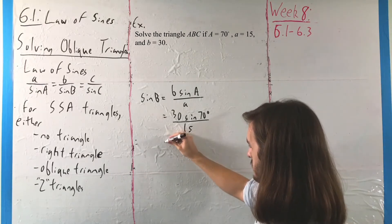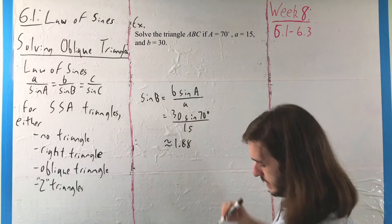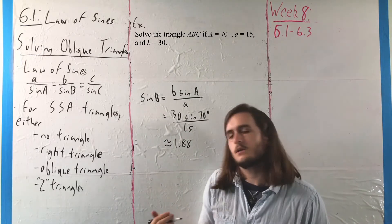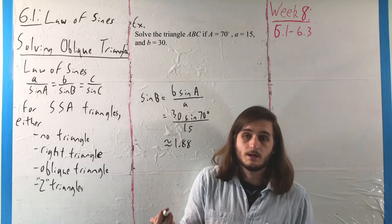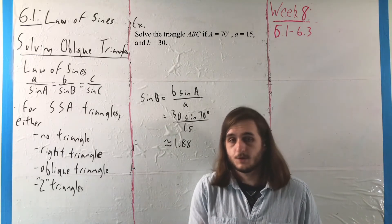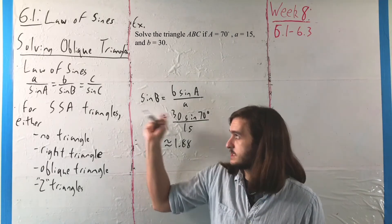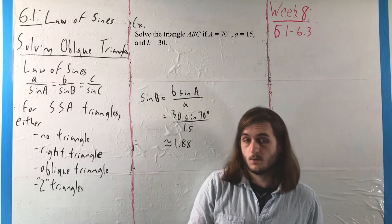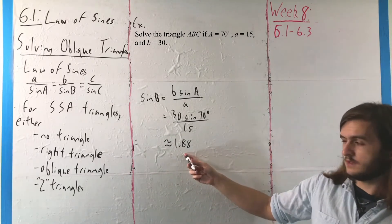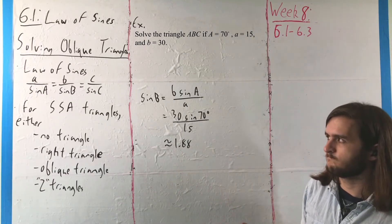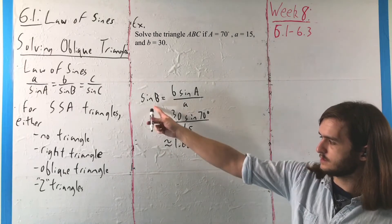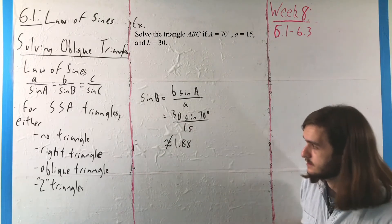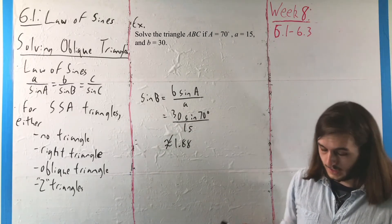But that is approximately 1.88, which is a problem. Because, if you remember, the generic sine function, without any phase shifts, amplitude adjustments, or period adjustments, just the sine of the angle, has a maximum value of 1. Its range is from negative 1 to 1. And we're getting something that's outside of that range, which means this cannot happen.